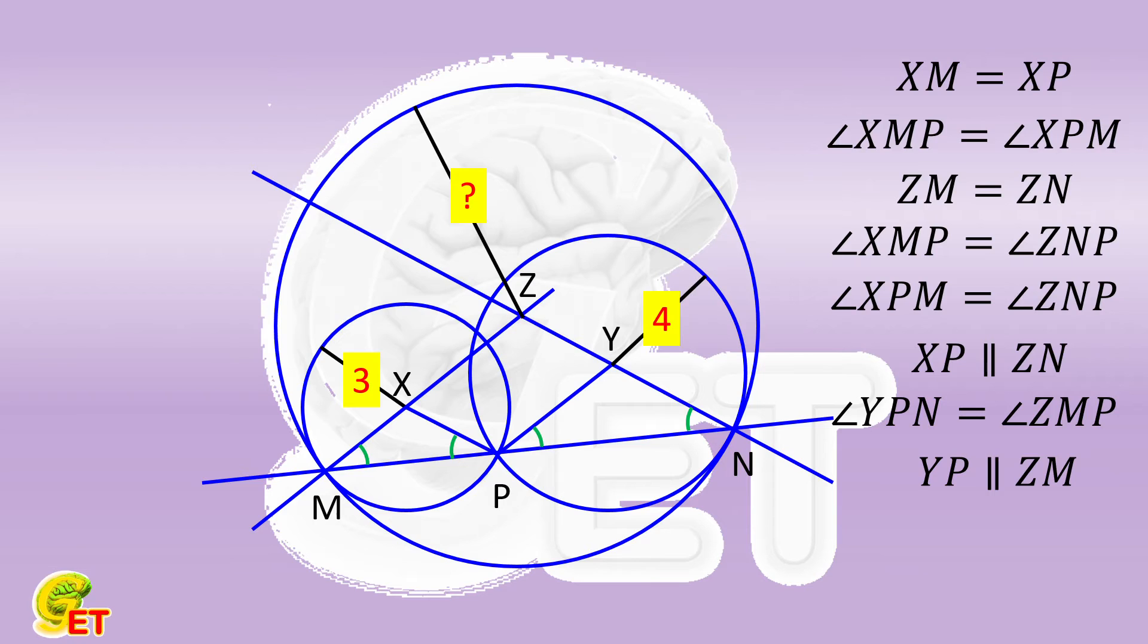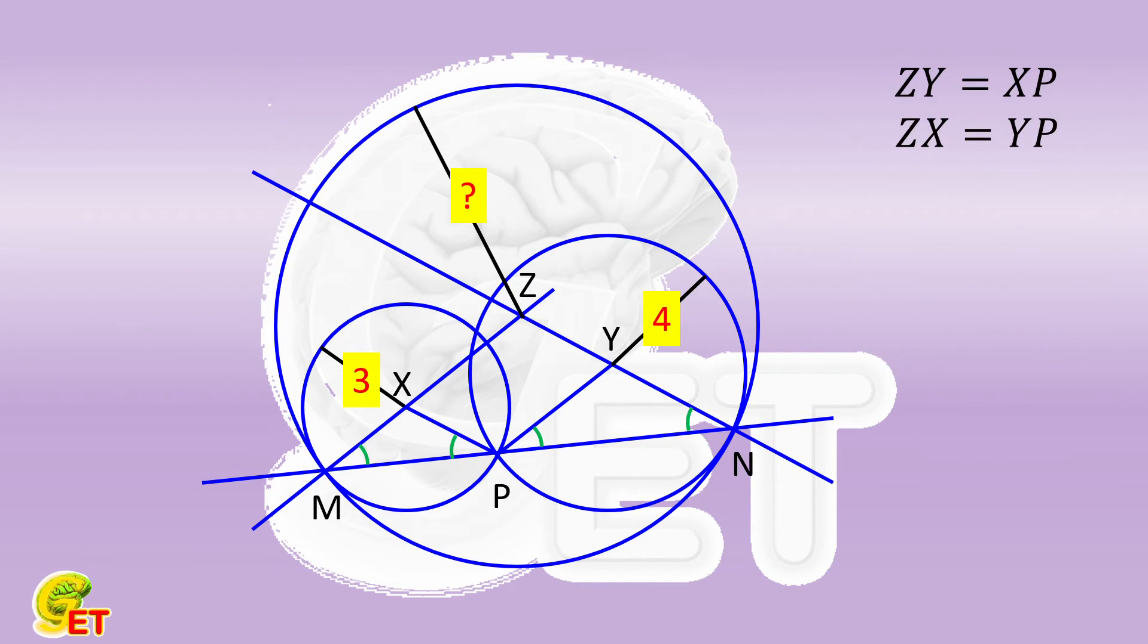Then each pair of its opposite sides are also equal respectively. The radius of the big circle Z is equal to the sum of the radii of the two small circles. That is, 3 plus 4, which equals 7.